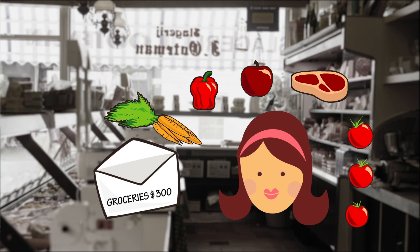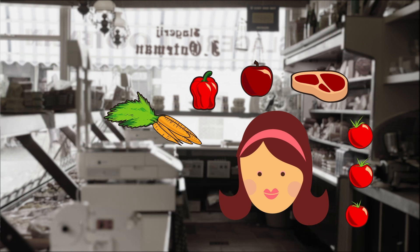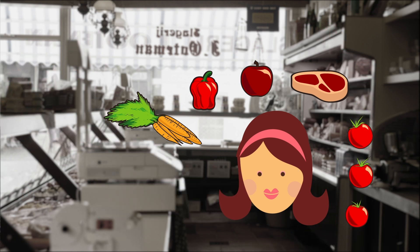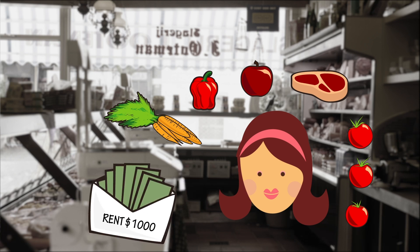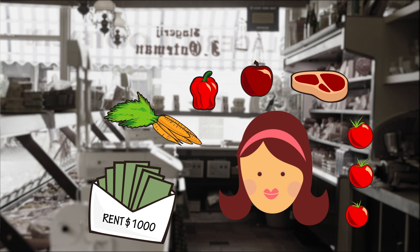And once her envelope was empty, she'd stop spending. All the while, my grandma still had a rent envelope fully funded with $1,000. So when the rent was due, grandma would have the exact cash needed to pay her landlord, no problem.